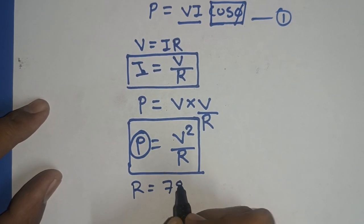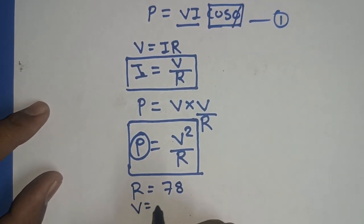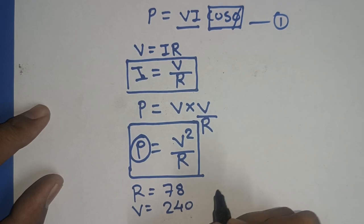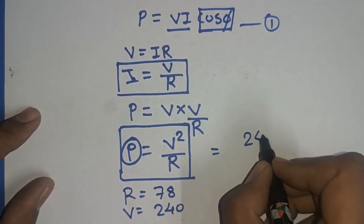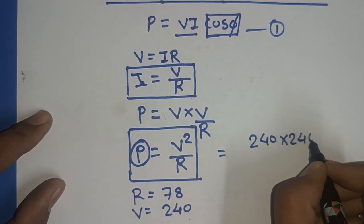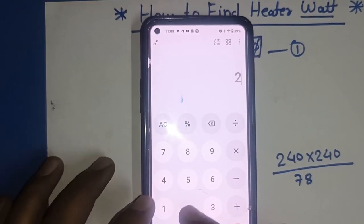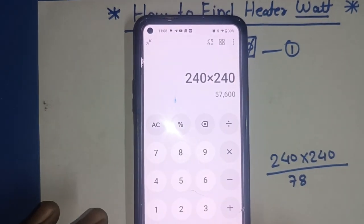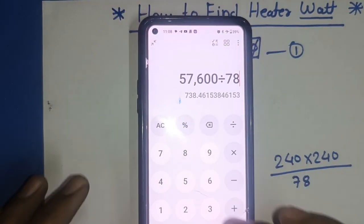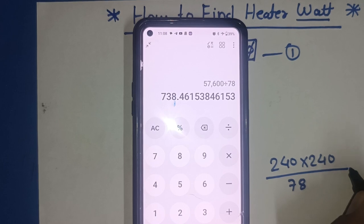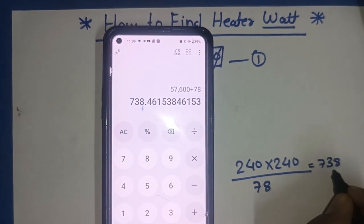Resistance value is 78 ohm. And input operating voltage is 240 volt AC. So, we can find watt of this heater. 240 multiply by 240 voltage. And resistance is 78. We just calculate 240 multiply by 240. 576000 divide by 78. So, we find 738 watt.